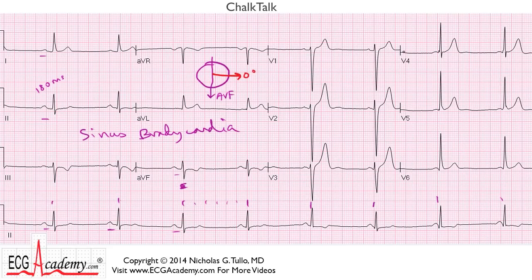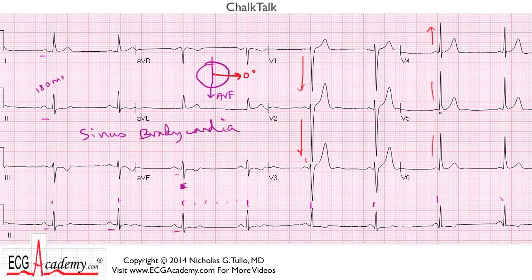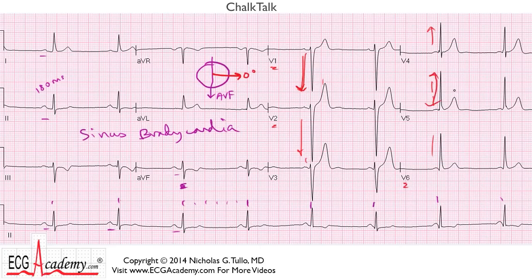If we look at the precordial leads, examining the QRS complex, we see very large S waves in V1 and V2. And the R waves progress fairly normally — there's a tall R in V4, so the transition point is V4. But again, you've got large voltage here. So what's the voltage criteria for LVH? Well, if we add up V1 plus V5 or V2 plus V6, and if it adds up to more than seven boxes, then voltage criteria for LVH is present. I see four boxes here and another four boxes here — that makes eight — and so we can say that LVH is present.